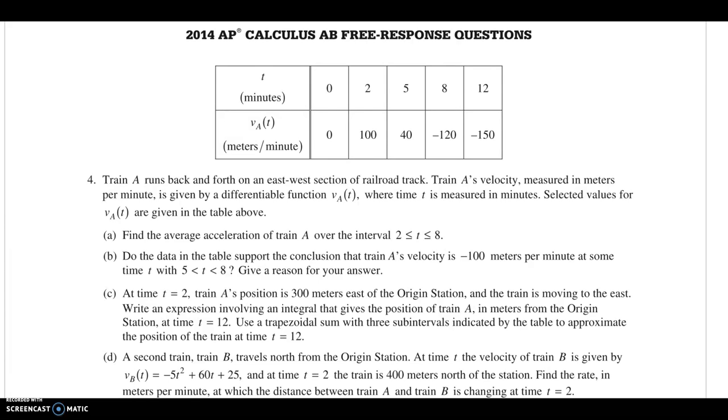For this video, I'm going to cover the 2014 free-response question number four, a problem dealing with data tables. To start with, we have a train that runs back and forth on an east-west section of railroad track. That's going to become important a little bit later.